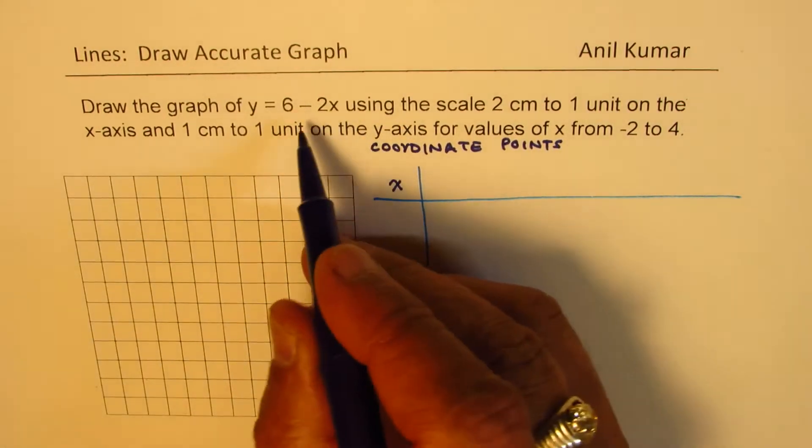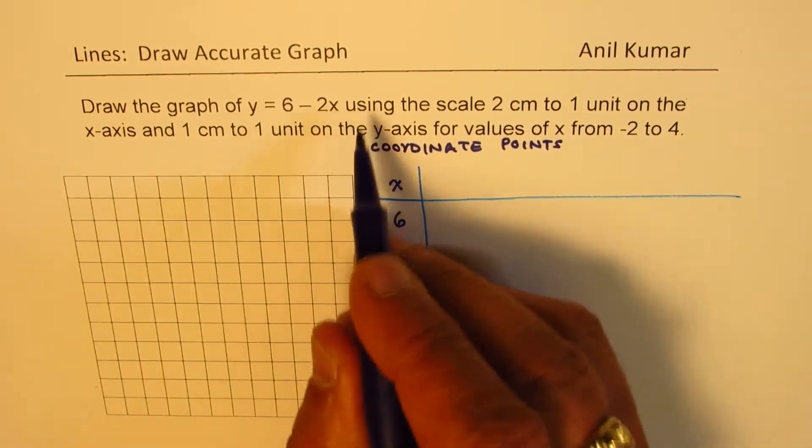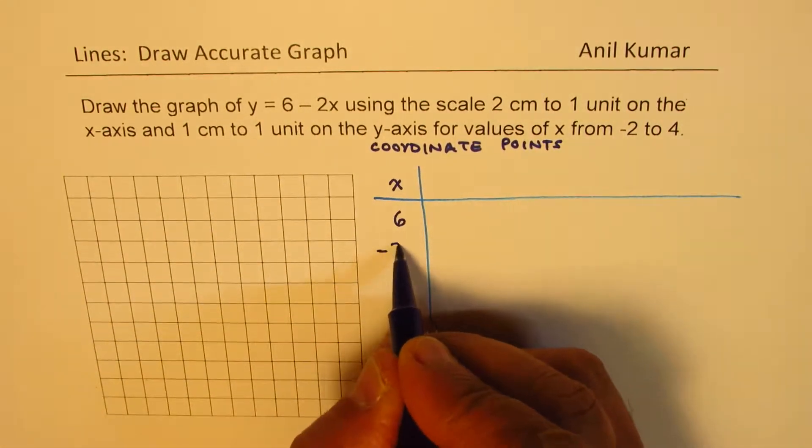So you could also do like this. You can write 6 here. So for each value of x, we'll have 6 and then we have minus 2x.